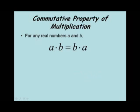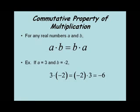Now we'll look at the commutative property of multiplication. For any real numbers a and b, a times b equals b times a. Again, we just switch the order and the answer is the same. If we let a equal 3 and b equal negative 2, 3 times negative 2 equals negative 2 times 3, both equal negative 6.